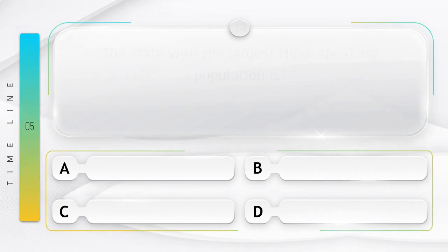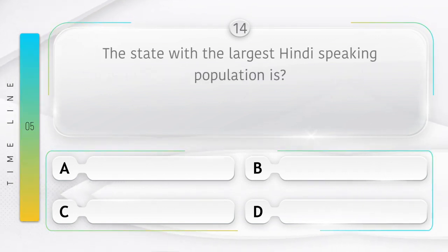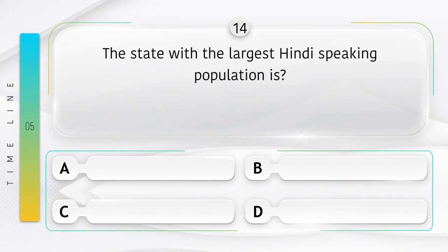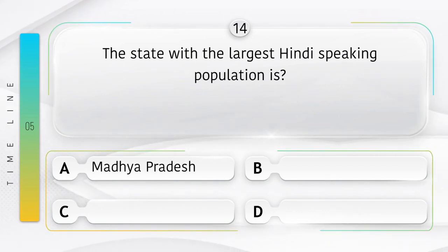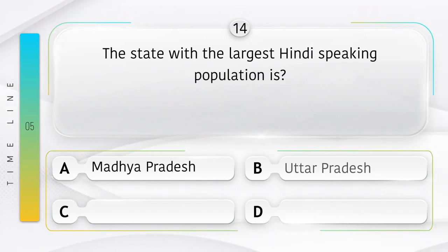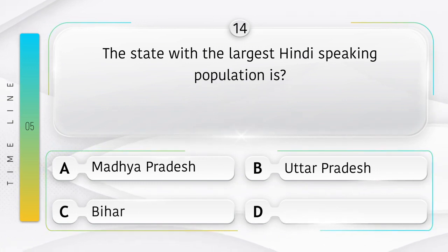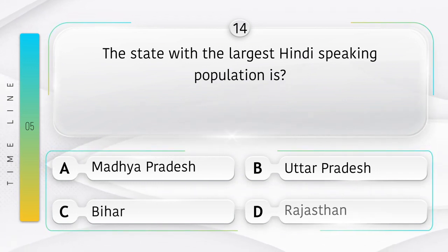The state with the largest Hindi-speaking population is: option A: Madhya Pradesh, B: Uttar Pradesh, C: Bihar, D: Rajasthan. Answer is option B, Uttar Pradesh.